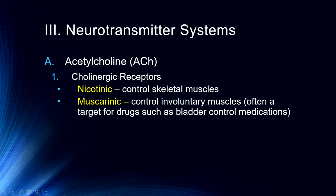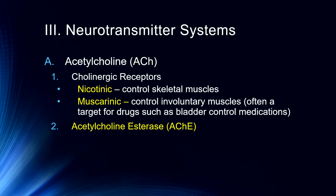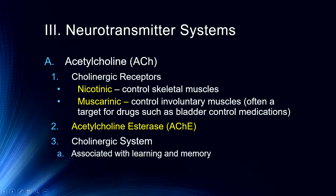These two different receptor types have important functions both in the peripheral nervous system and the central nervous system. We talked in the previous lecture about acetylcholinesterase and how it breaks down acetylcholine in the synapse. By blocking acetylcholinesterase, we can try to improve memory in people with Alzheimer's disease with drugs like Aricept. But irreversible acetylcholinesterase inhibitors are poison — nerve gas, pesticides, etc. The cholinergic system is an important part of our central nervous system and is associated primarily with learning and memory.